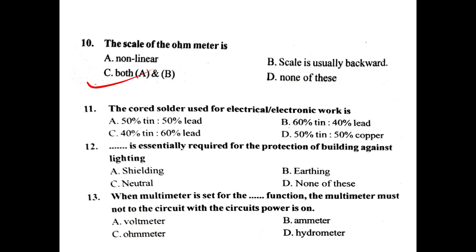The correct solder used for electrical or electronic work — what composition? Answer: 60% tin, 40% lead.